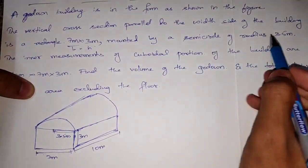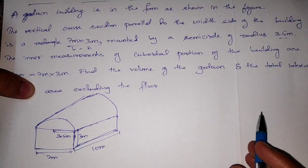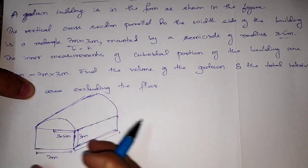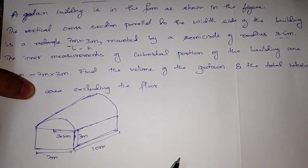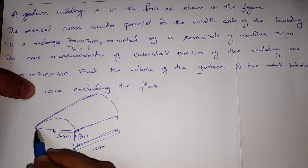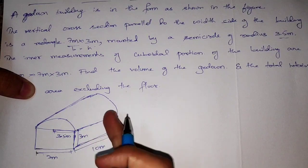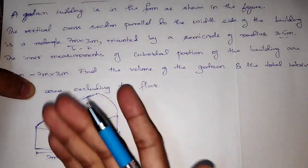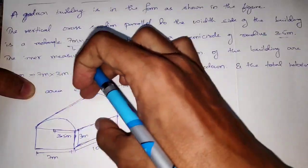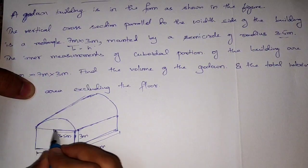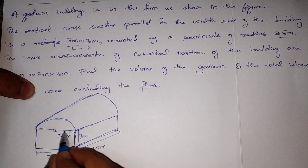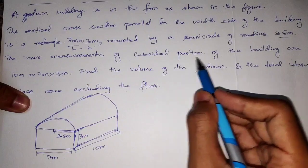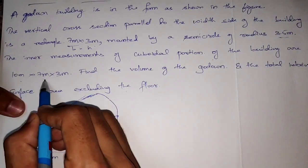Mounted by a semicircle of radius 3.5 cm. If this is a semicircle, the cubic portion is placed with a semicircle on top. A cylinder is made within the cylinder — you can cut the cylinder here. Now we have to consider the semicircle. The inner measurements of the cuboidal portion of the building are 10 m, 7 m, 3 m.